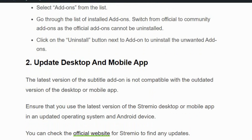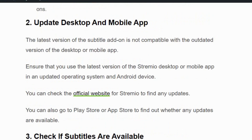Solution number two: update the desktop and mobile app. Sometimes the error occurs because you are using an outdated version of the desktop or mobile app. Ensure that you are using the latest version of the Streamivo desktop or mobile app on an updated operating system. You can check the official Streamivo website to find any updates.